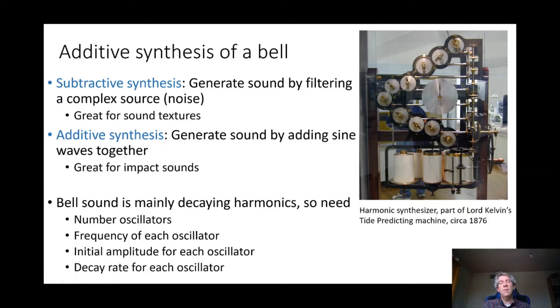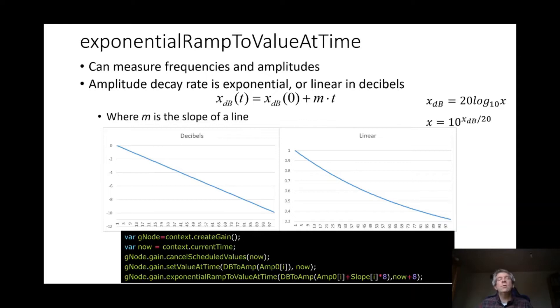So what we need to do for the bell sound is additive synthesis. It's an impact sound—a hammer strikes the bell or someone hits the side of the bell. The bell resonates, creates a burst of content, but very quickly settles down into a small number of frequency components exponentially dying down over time.